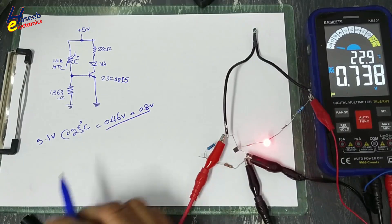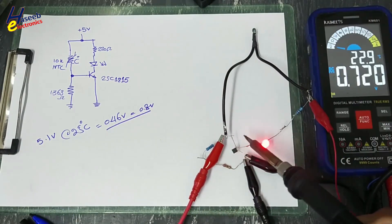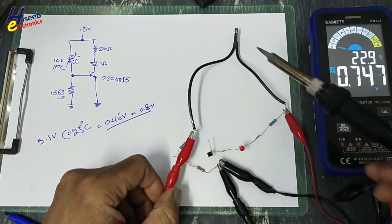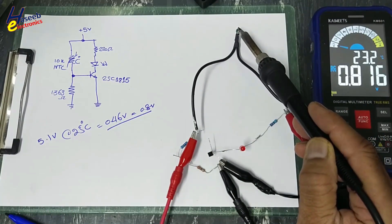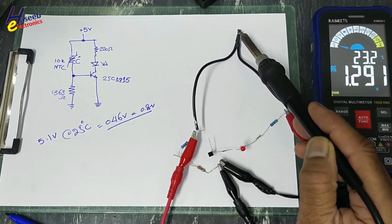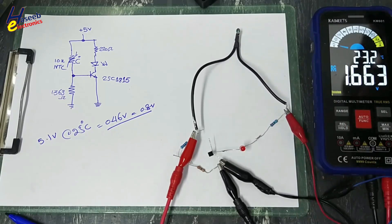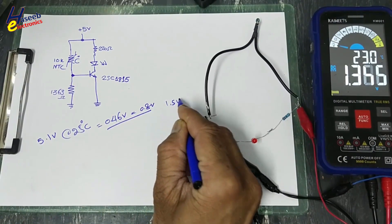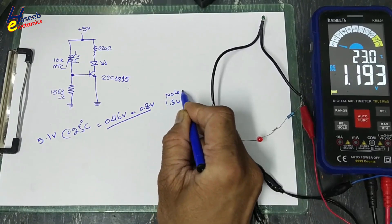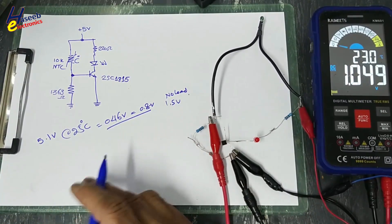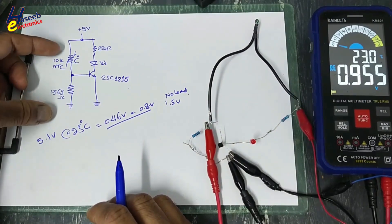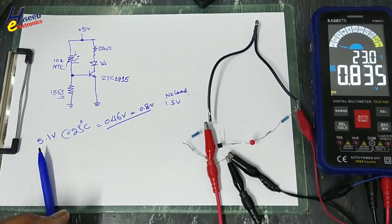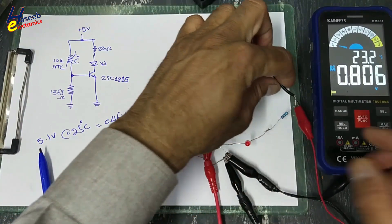This is the voltage variation under load. If we disconnect the base and check again, it reads 1.2V to 1.4V with no load at 1.5V. If we increase the supply voltage, this point will increase proportionally. Now I will provide 12V instead of 5V.